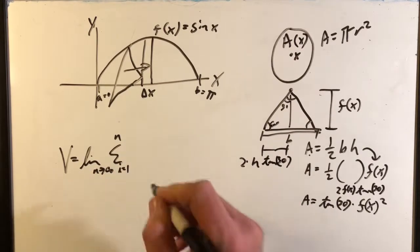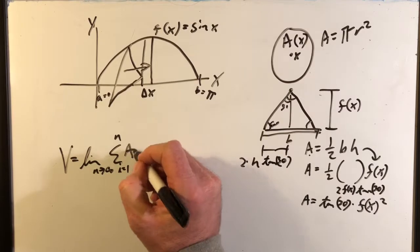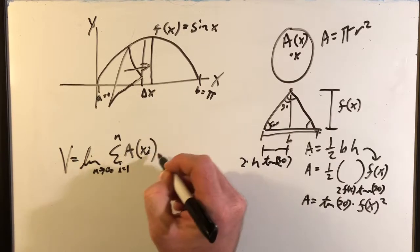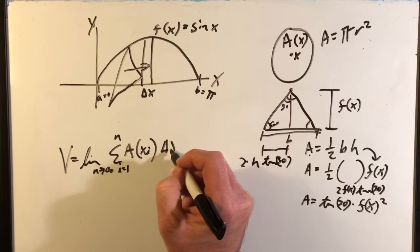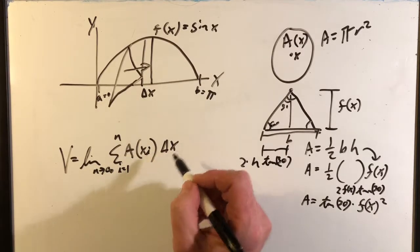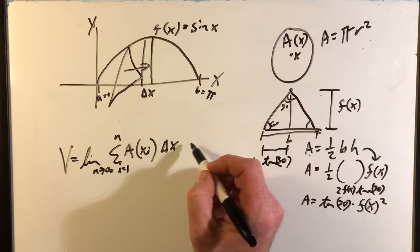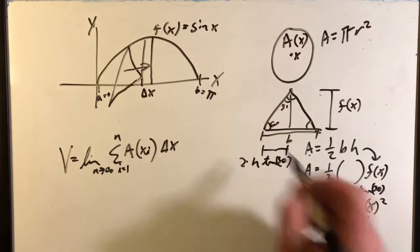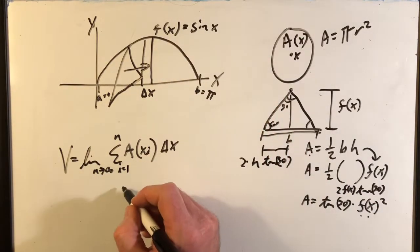Lots of times on the test, if they see that, they're going to love it. The grader is going to say, okay, this person knows what they're talking about. So area A of x_i times delta x. So that A of x_i becomes this over here. We're going to substitute in f of x for sine x.